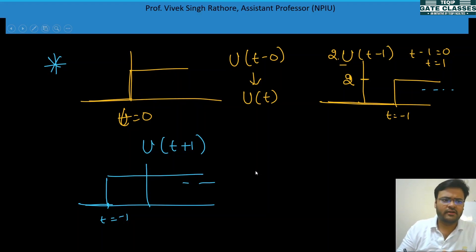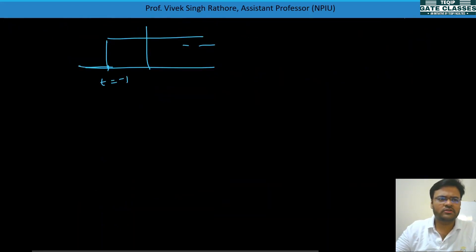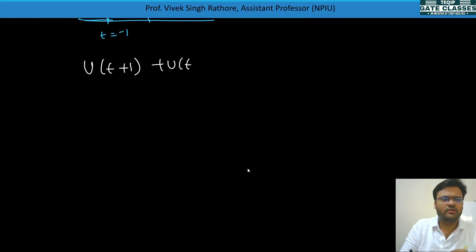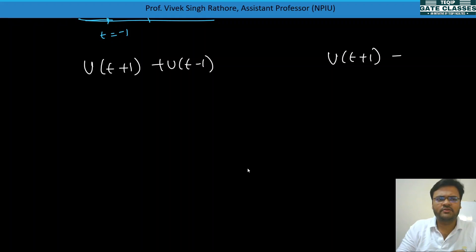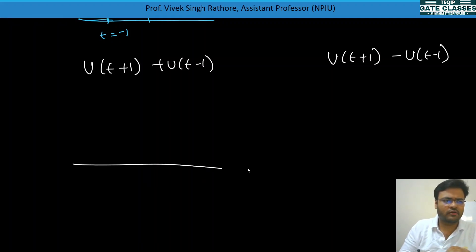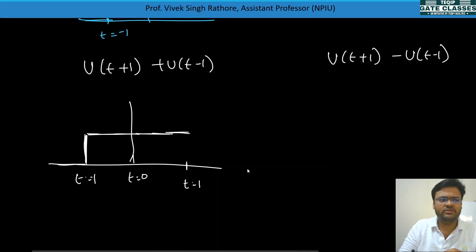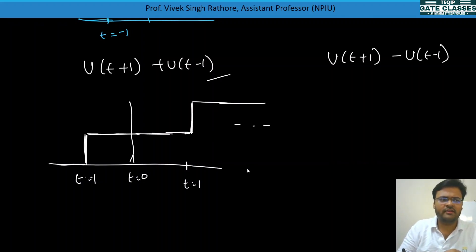Now consider u(t + 1) + u(t − 1). At t = −1 there is a +1 step change, and at t = 1 there is another +1 step change. This signal also goes on to infinity, so it is again an infinite duration signal.